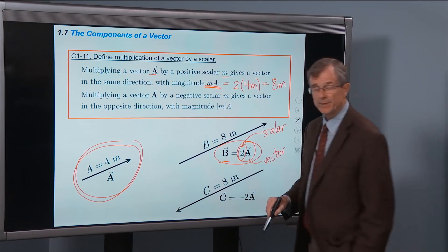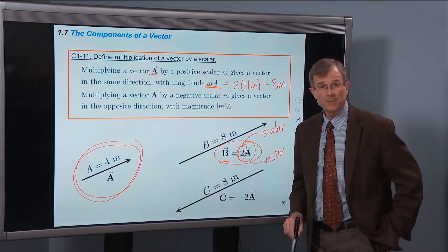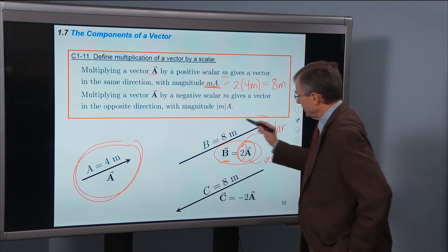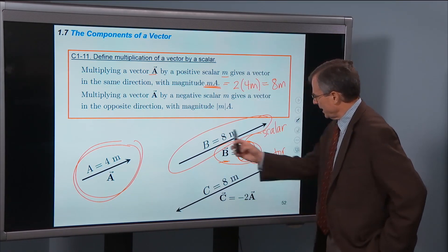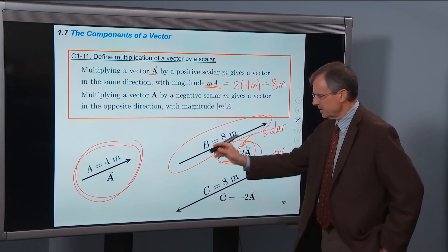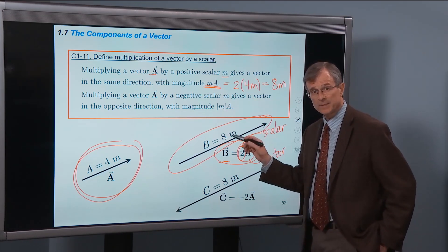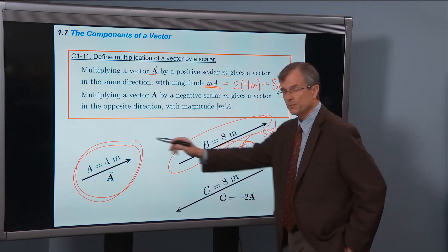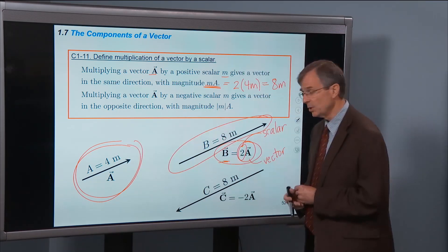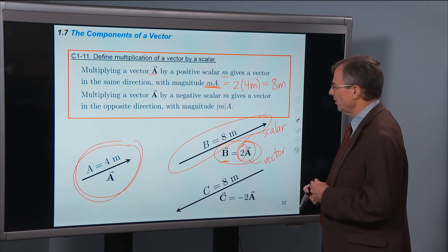So we should have a vector whose magnitude is 8 meters. And sure enough, this is what's shown here. That vector B is in the same direction as A. Its magnitude is twice the magnitude of A, 8 meters versus 4 meters. No big deal.